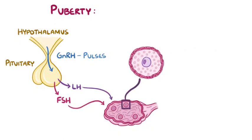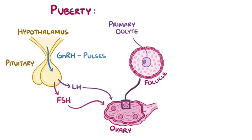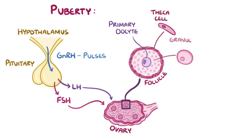The ovarian follicles are scattered throughout the ovaries, and each ovarian follicle is made up of a ring of follicular cells surrounding a primary oocyte at its core. As the ovarian follicles develop, the follicular cells differentiate into theca cells and granulosa cells, which both play a role in the synthesis of progesterone and estrogen.